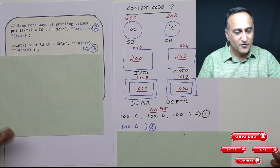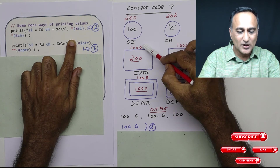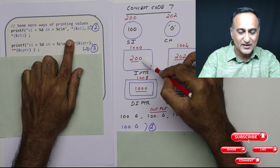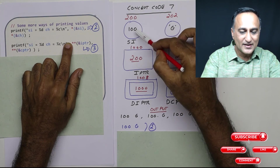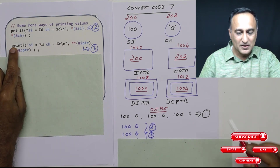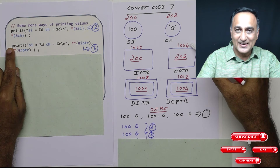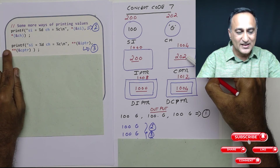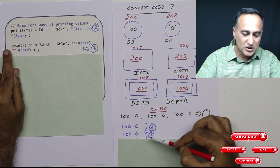Now let's look at a few more ways. If I print address of IPTR, it will print 1000. The first star tells me the value at address 1000, which is 200. The second star tells me the value at address 200, which is 100. So again, 100 is going to be printed. Now for address of CPTR, address of CPTR is 1004. The first star gives me the content at 1004, which is address 202. The next star tells me the content at 202, which happens to be G, so G is going to be printed.